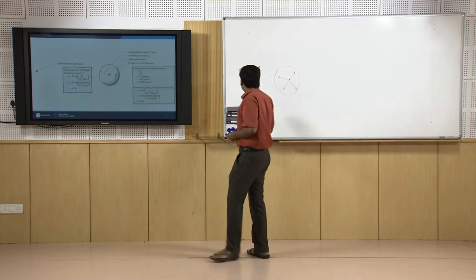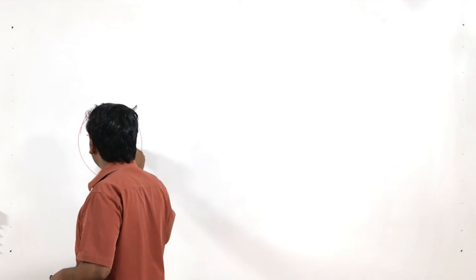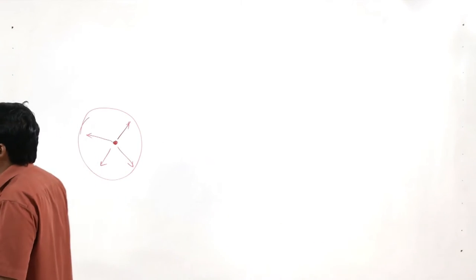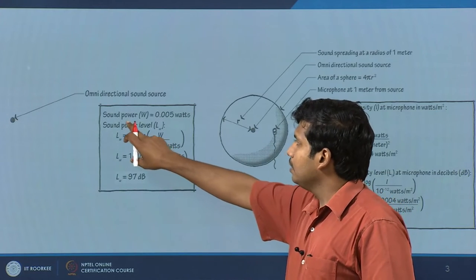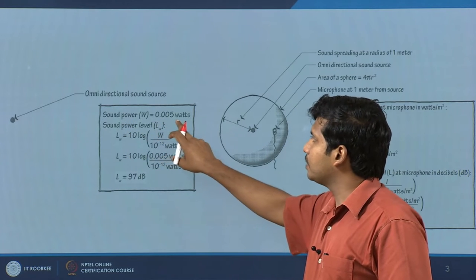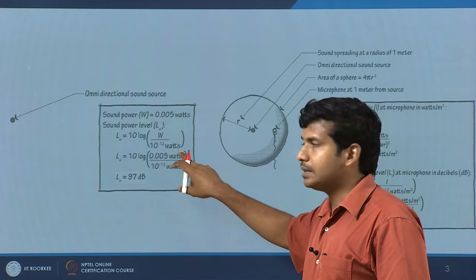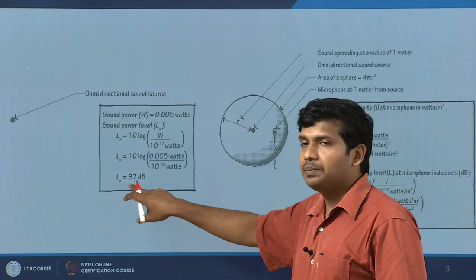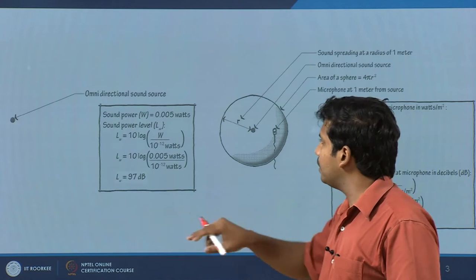We have been assuming sound as a point emitting sound equally in all directions. Imagine a sphere - the sound source emits sound equally across all directions. We call it an omnidirectional source. Let us assume a sound power of 0.005 watts. The sound power level, substituting the reference of 10⁻¹² watts, gives around 97 dB. This is the sound power level - from sound power, you get the sound power level.